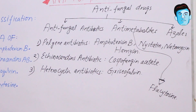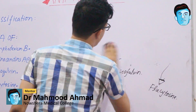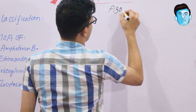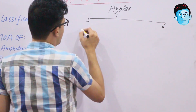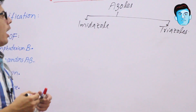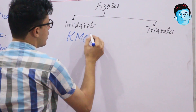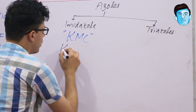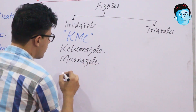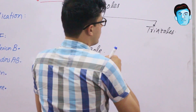The azoles are one of the most important classes of antifungal drugs. Azoles are further classified into two important groups: imidazoles and triazoles. To recall the imidazole drugs, we use the mnemonic KMC — where K stands for ketoconazole, M stands for miconazole, and C stands for clotrimazole.